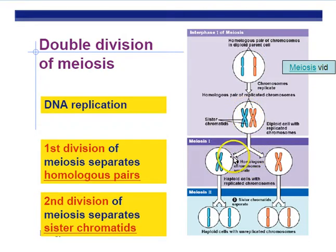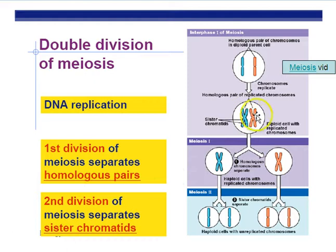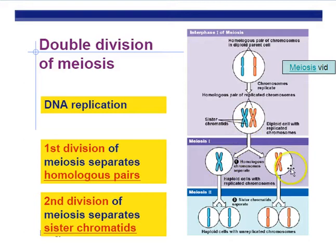During meiosis I, this is fairly important. The first cell division during meiosis divides out the homologous chromosomes. Remember that you have two of every chromosome. During mitosis, you do not divide out the homologous pairs — you just divide the sister chromatids. During meiosis I, the homologous chromosomes pair up, and then the pairs separate into their own cell.